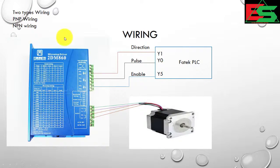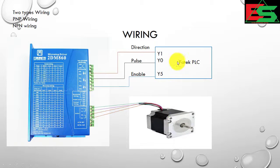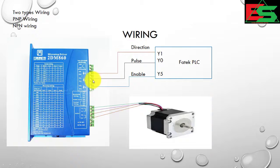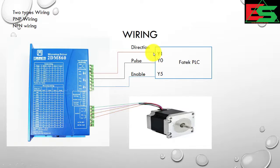Now for wiring - there are two types: PNP and NPN. In this slide I will show the basic wiring between Fatek PLC, driver, and motor. You can see here the Fatek PLC outputs Y0 and Y1. Y0 will generate pulses and I will connect it with the pulse connection strip. There are two points: pulse-plus and pulse-minus, according to your NPN or PNP wiring. To control direction of the stepper motor, Fatek PLC will give a signal on Y1.